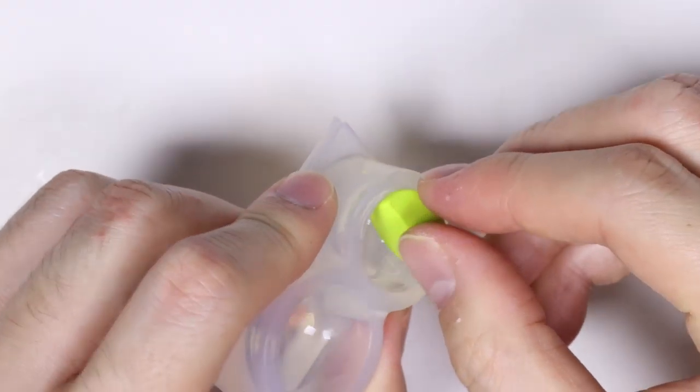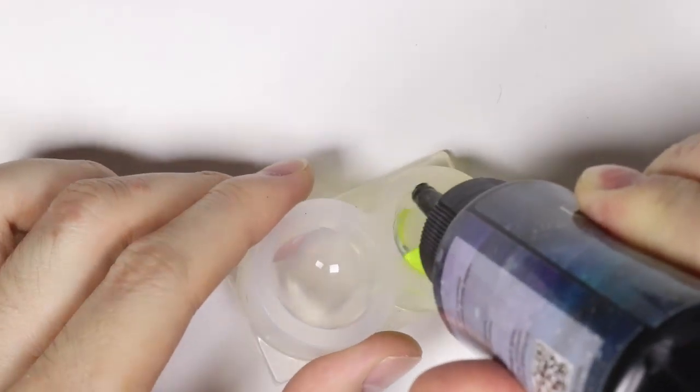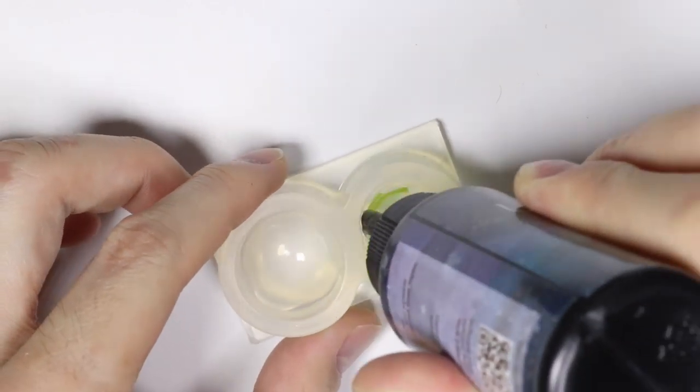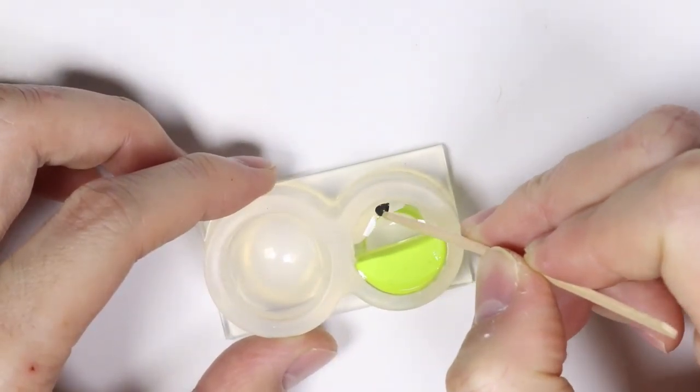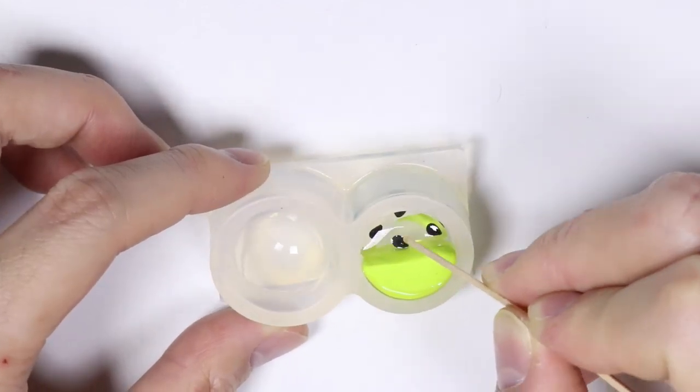Next we're going to make the watermelon themed one. So instead of a black head, I gave it a light green head. And I followed the same way where I made UV resin everywhere and I filled it with little black teardrop shapes for the watermelon seeds.